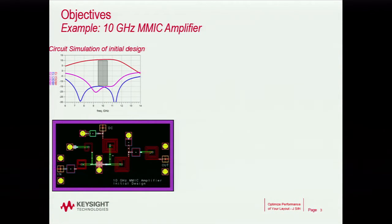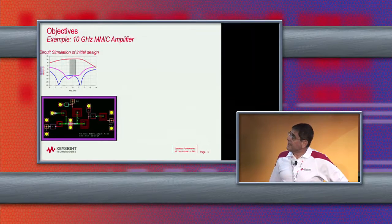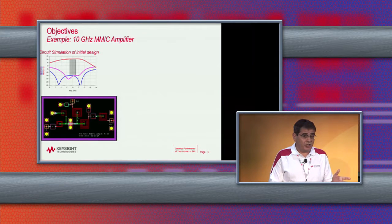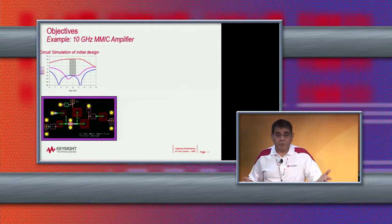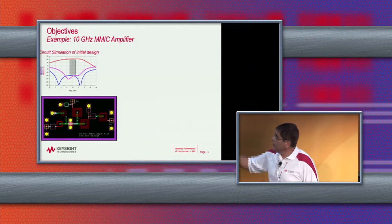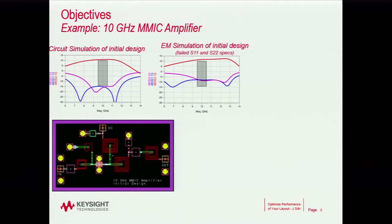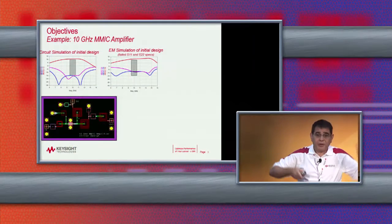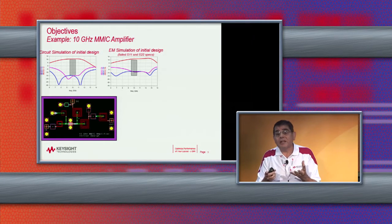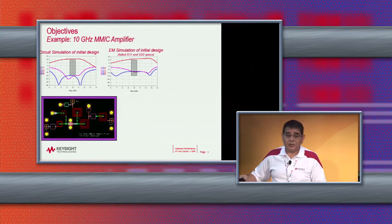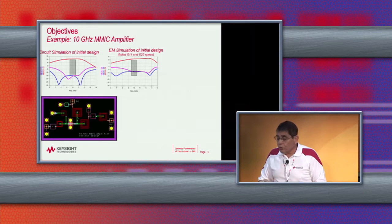Just to discuss the objectives with a few pictures — here is a sample of a MMIC amplifier. On the top you can see the circuit simulation of the gain and the return loss, and everything is meeting specs on the circuit simulation. But that's not enough. Most of us tend to do planar EM simulation, and when I did EM simulation, notice that my return loss specs are not met. In other designs you might have gain, power, efficiency, or other specs not met when you include the proximity effects and coupling in EM simulation.